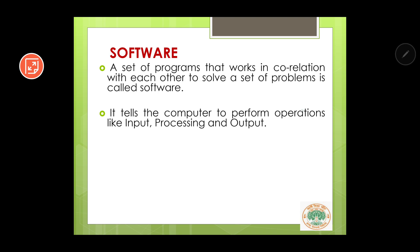Software tells the computer to perform operations like input, processing, and output. A computer does three main tasks no matter what you are doing. The first task is input. For example, if you are writing your name 'RAJ' in your computer, you type RAJ on the keyboard. Whatever you are typing through the keyboard or doing through the mouse is known as input.